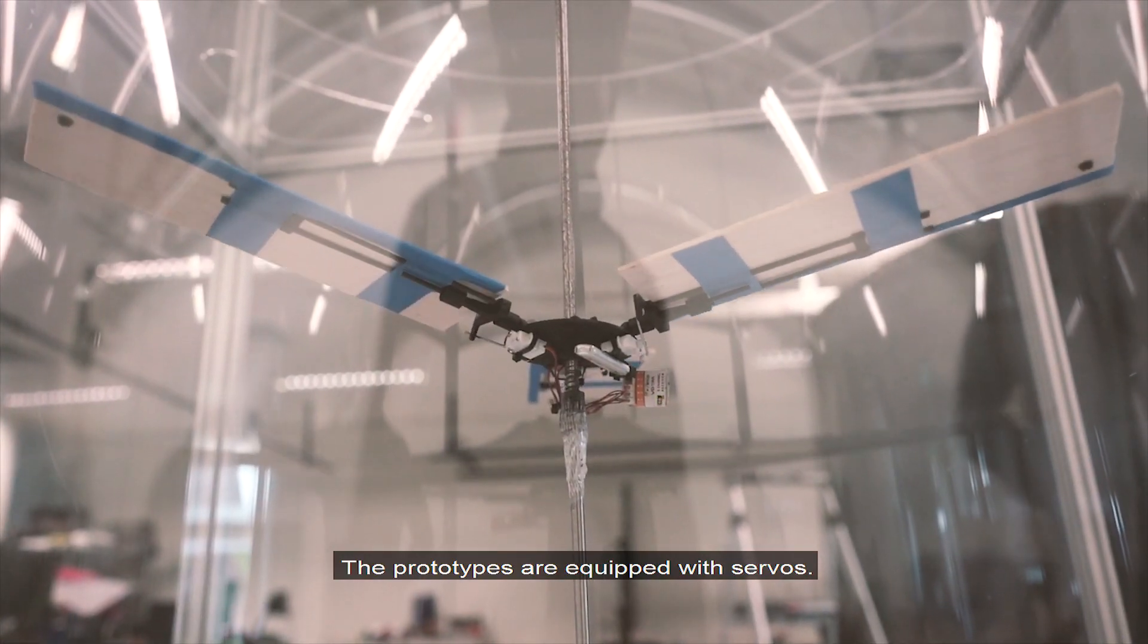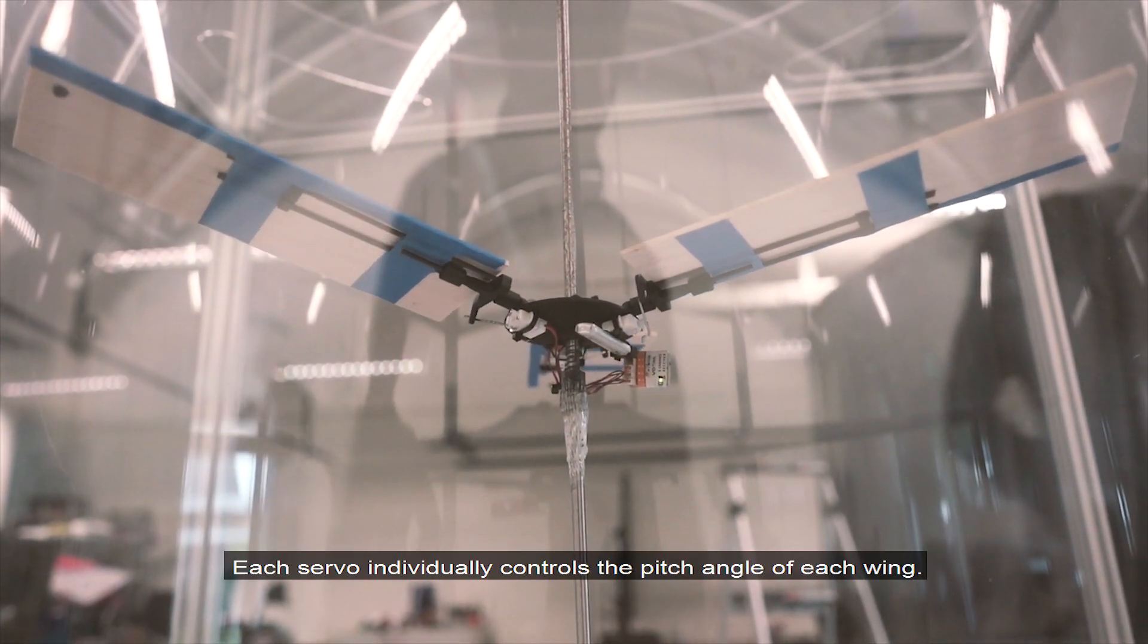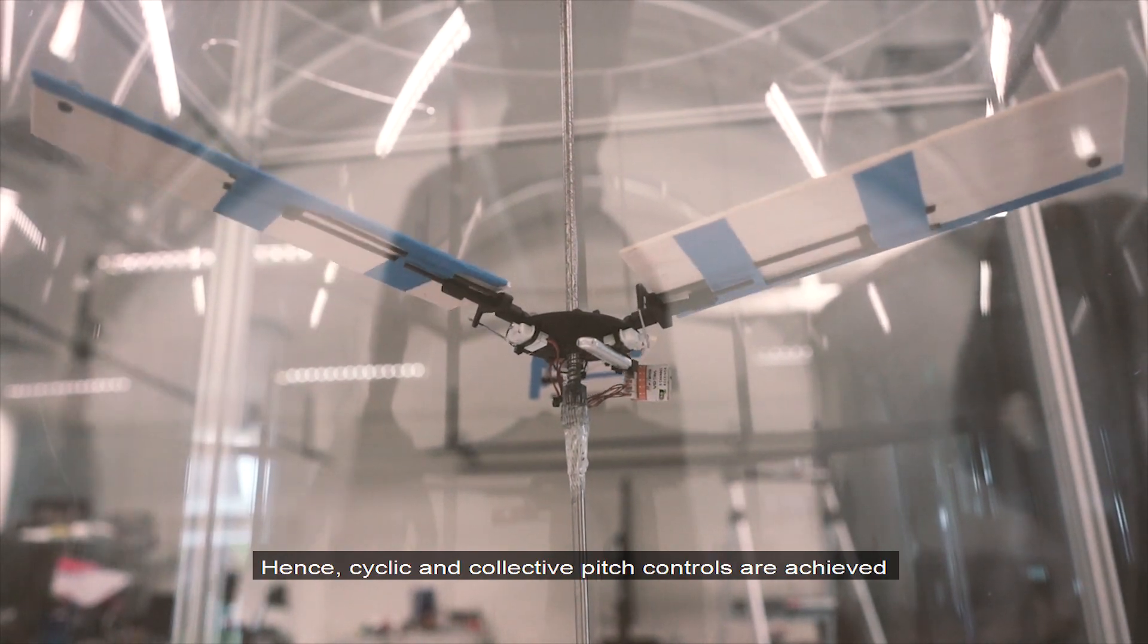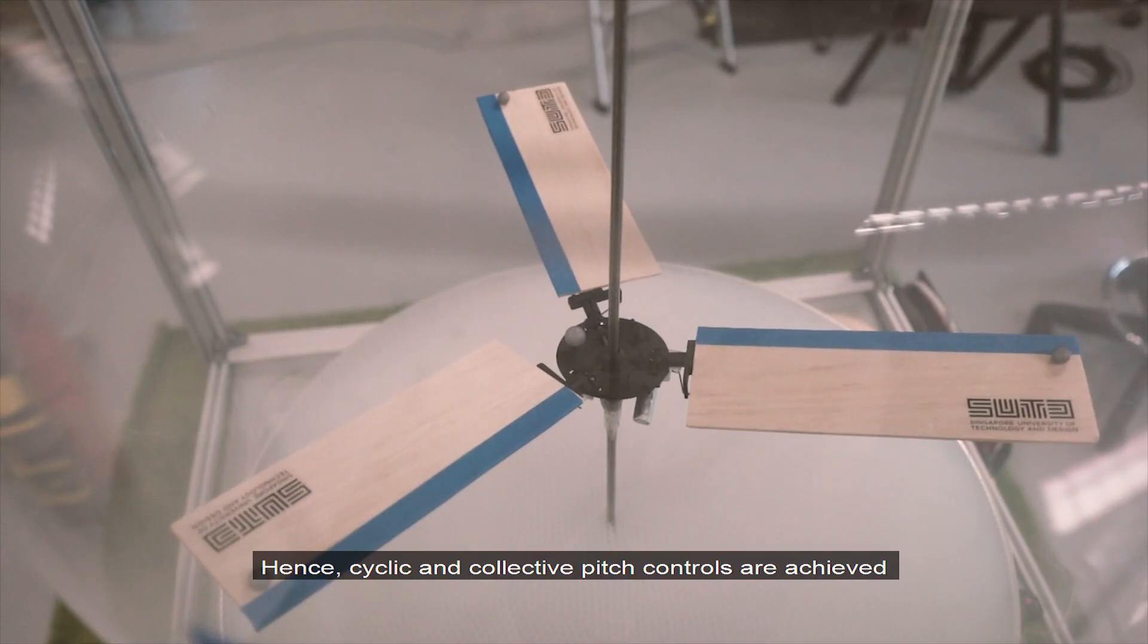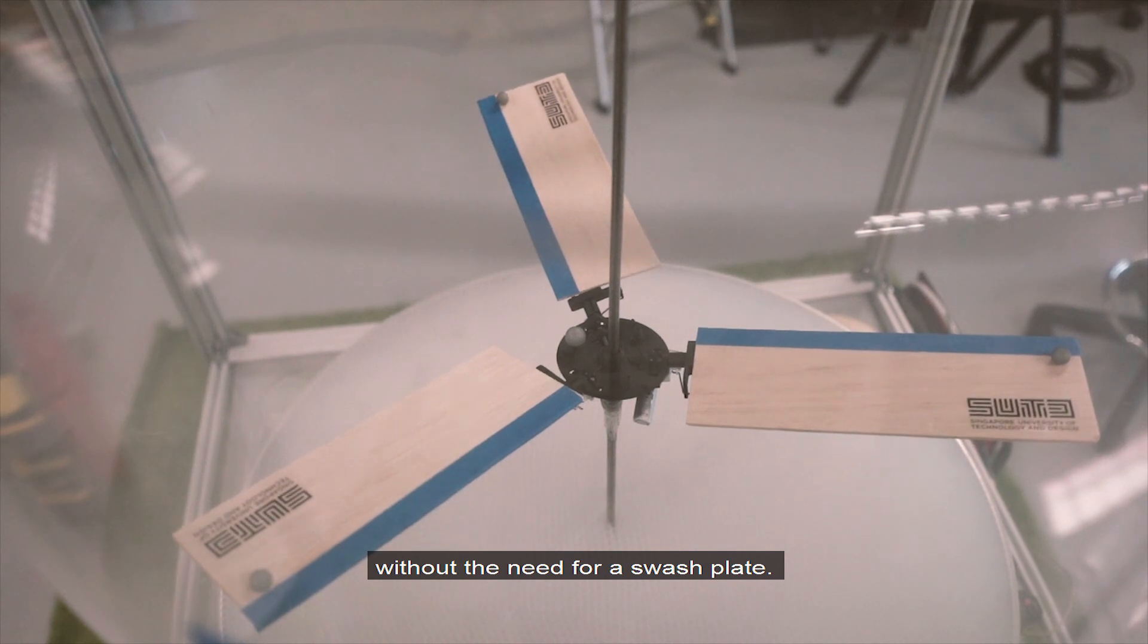The prototypes are equipped with servos. Each servo individually controls the pitch angle of each wing. Hence, cyclic and collective pitch controls are achieved without the need for a swash plate.